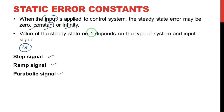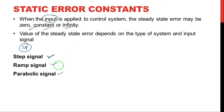In the previous problem, this is a different input — a combination of three inputs, so the constant is 1 by 60. If we apply a step signal to the control system, the steady state error may be zero, constant, or infinity. Similarly, if we apply a ramp signal to the control system, there may be zero, constant, or infinity.